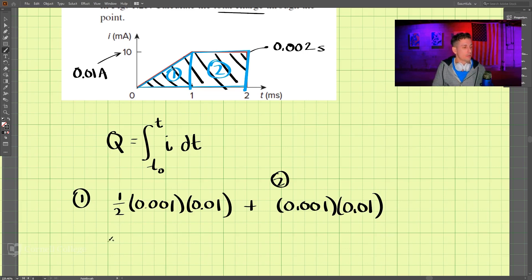Alright, so this would be the total Q. Let's grab the calculator. Looks like the total Q I got was 0.011 Coulombs. And that represents the total charge passing through this device when we're given the current and the time.